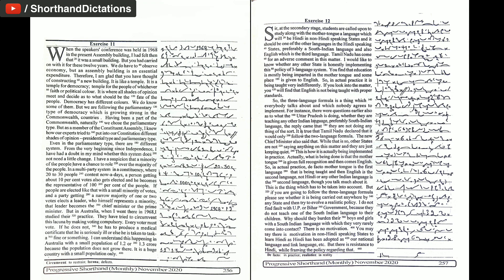At the secondary stage, students are called upon to study along with the mother tongue, a language which will be Hindi in non-Hindi speaking states and it should be one of the other languages in the Hindi speaking states, preferably a South Indian language and also English, which is the third language. Tamil Nadu has come for an adverse comment in this matter. I would like to know whether any other state is honestly implementing this policy of three-language system. You find that education is mostly being imparted in the mother tongue and some place is given to English.